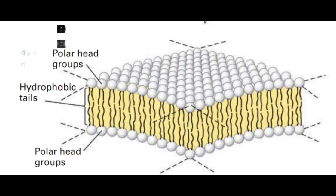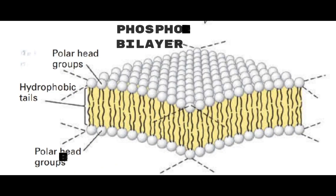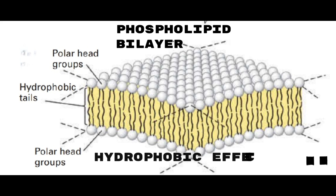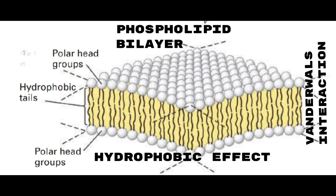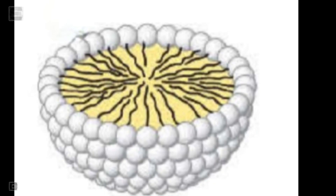In a phospholipid bilayer, the polar groups face outward to seal the hydrophobic fatty acyl tails from water. The hydrophobic effect and van der Waals interactions between the fatty acyl tails drive the assembly of the bilayer.